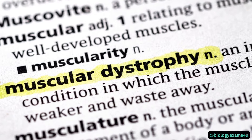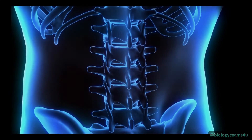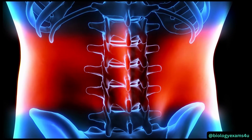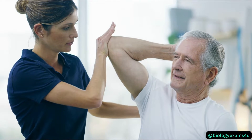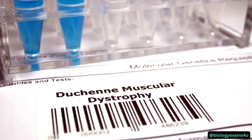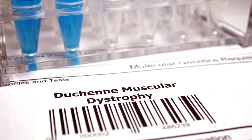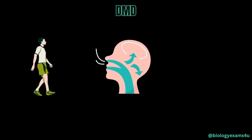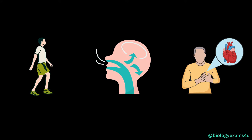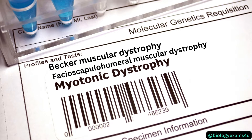Muscular dystrophy is a group of genetic disorders that cause progressive muscle weakness and degeneration. It affects both males and females and can manifest in early childhood or later in life. The most common type is Duchenne muscular dystrophy, which primarily affects boys and can lead to difficulty walking, breathing, and heart problems. Other types include Becker muscular dystrophy, myotonic dystrophy, and facioscapulohumeral dystrophy.